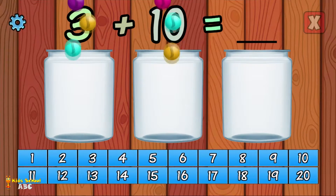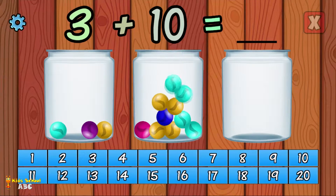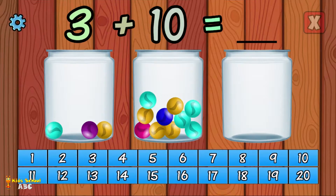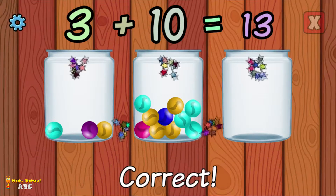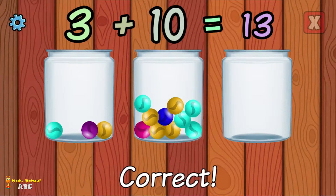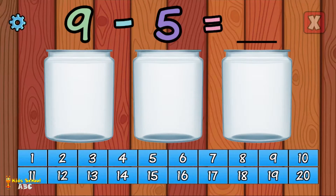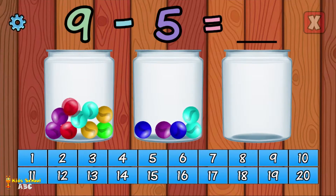What is 3 plus 10? Correct! 3 plus 10 equals 13. What is 9 minus 5?